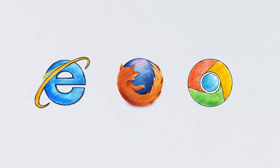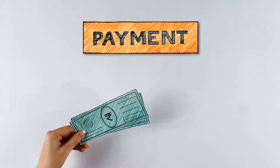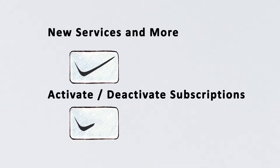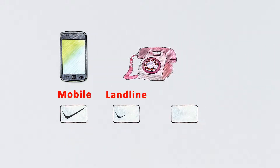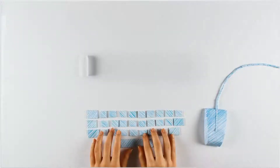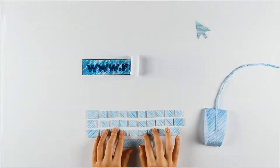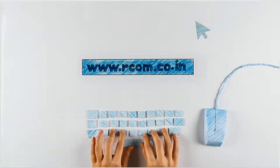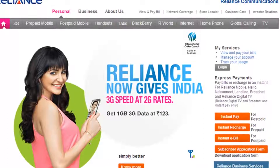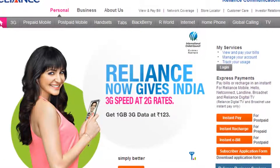Manage your prepaid and postpaid accounts online. You can view and pay your bills, recharge your prepaid account, opt for new services, and activate or deactivate subscriptions. You can also link multiple mobile, landline, and broadband accounts under a single login. To get started, visit www.rcom.co.in and create your personalized and secure login.